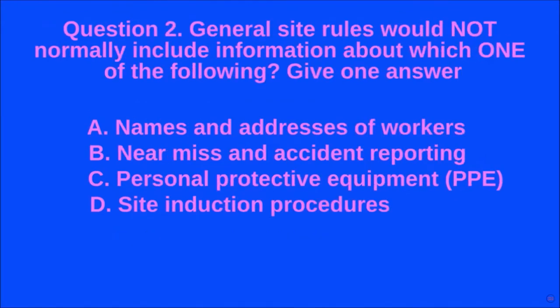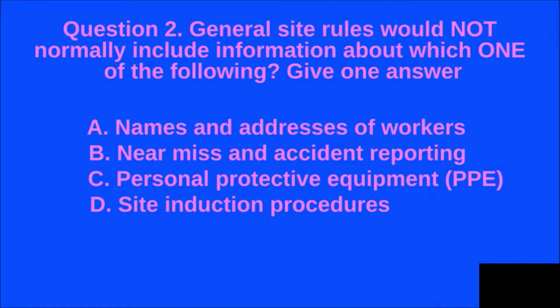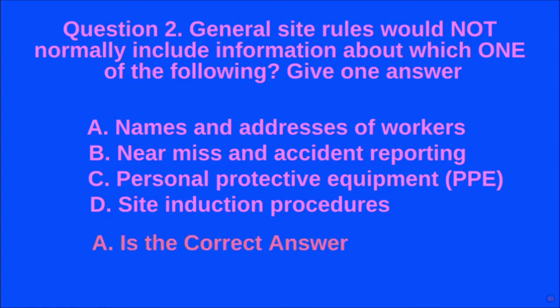Question 2: General site rules would not normally include information about which one of the following? Give one answer. A: names and addresses of workers, B: near miss and accident reporting, C: personal protective equipment (PPE), D: site induction procedures. A is the correct answer.